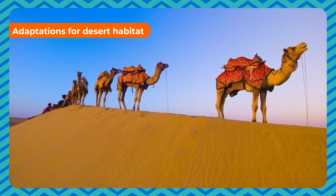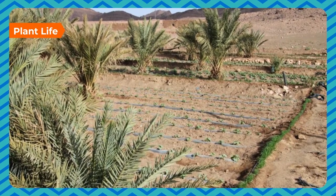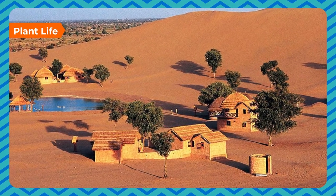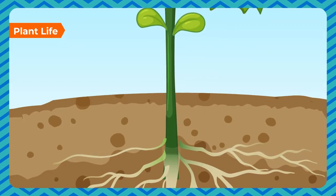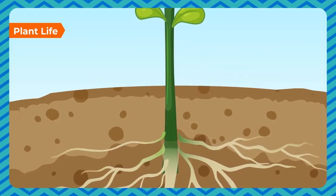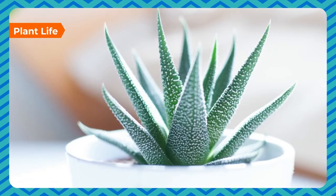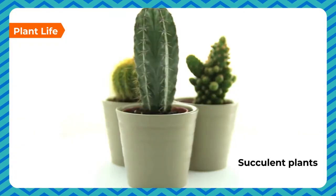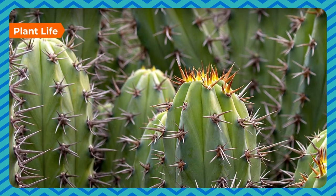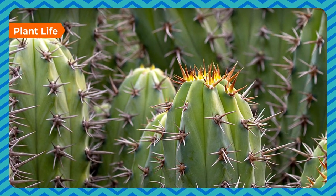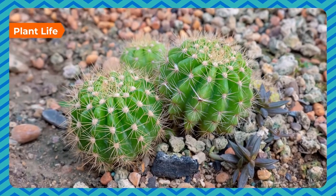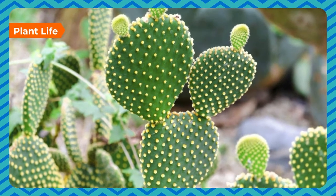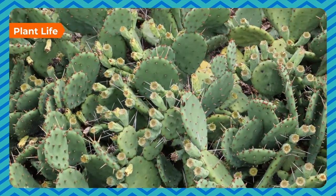In the desert, the temperature is high and there is a shortage of water. Desert plants have long roots that penetrate deep inside the soil in search of water. Many plants such as cacti have fleshy stems to store water — they are called succulent plants — and the stem is covered with a thick waxy layer that helps retain water. High temperatures cause great water loss from leaves, so leaves in cacti are reduced to spines, preventing water loss by transpiration.